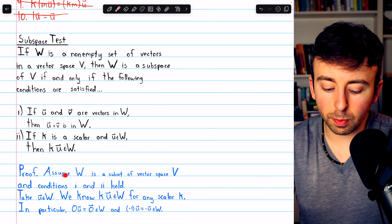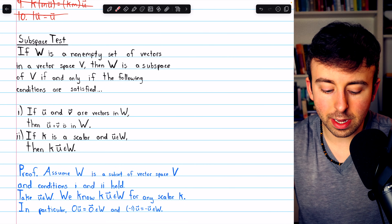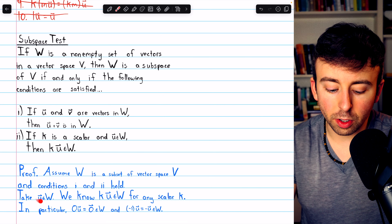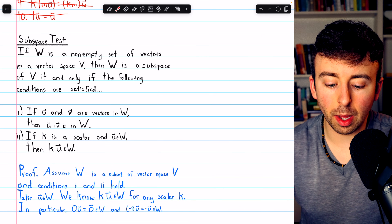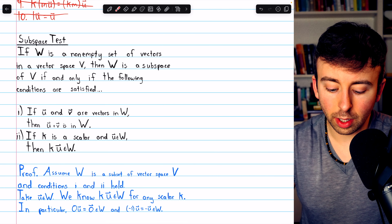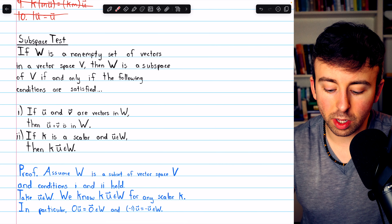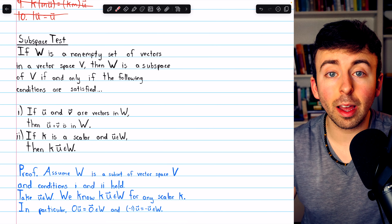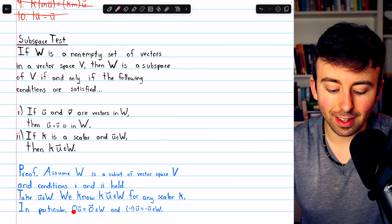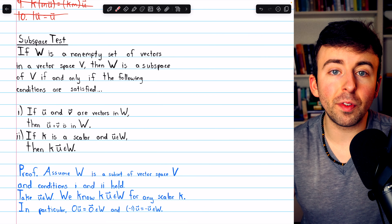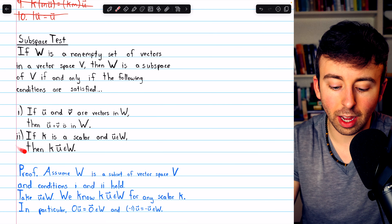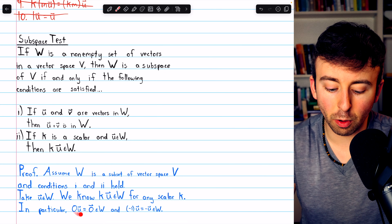Here is the proof. We assume W is a subset of V and conditions 1 and 2 hold. We can take a vector U from W — we know this is possible because W is non-empty. By condition 2, any scalar K times U must also be in W. In particular, if we multiply U by the zero scalar, we get the zero vector, which must be in W because W is closed under scalar multiplication. So that forces W to contain the zero vector.